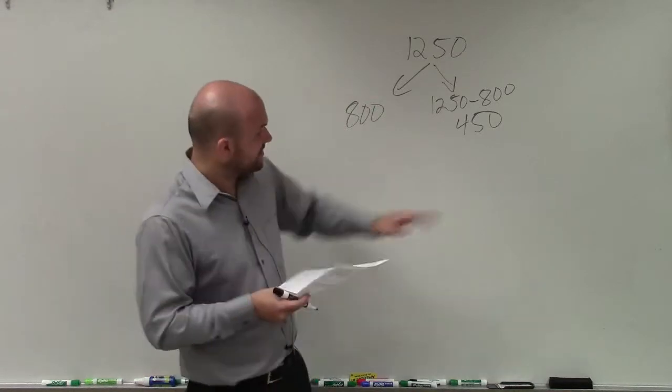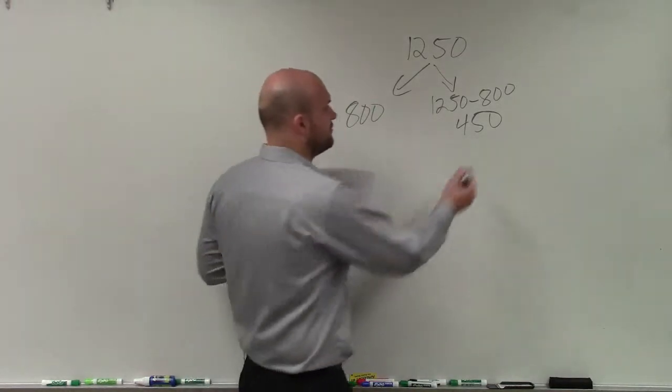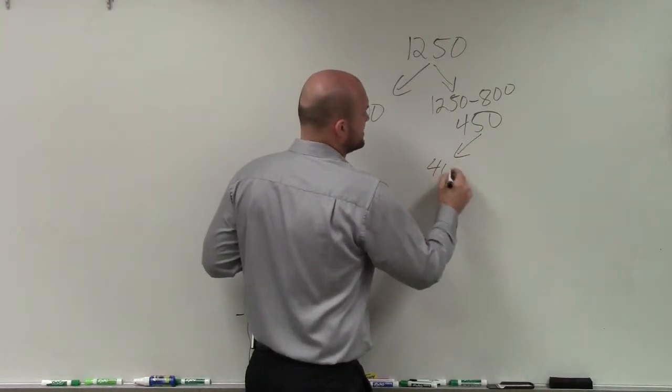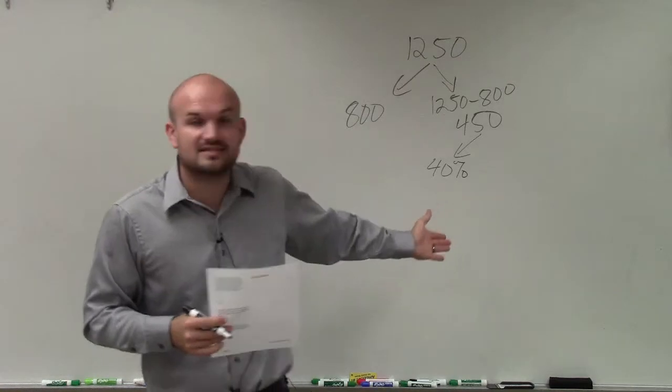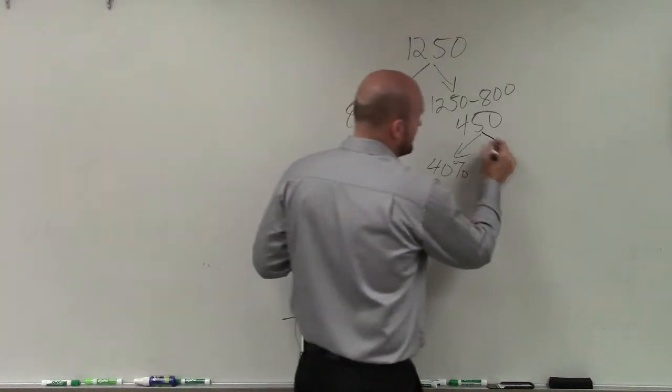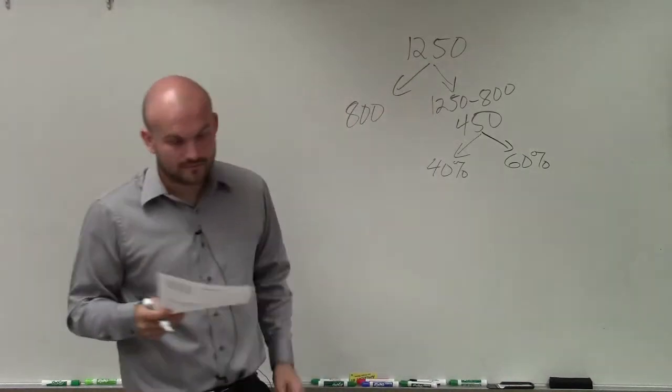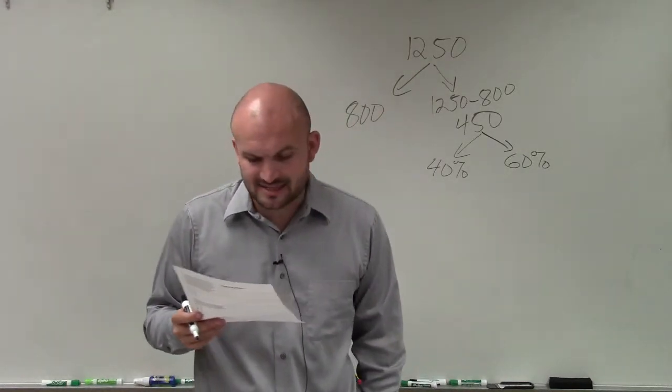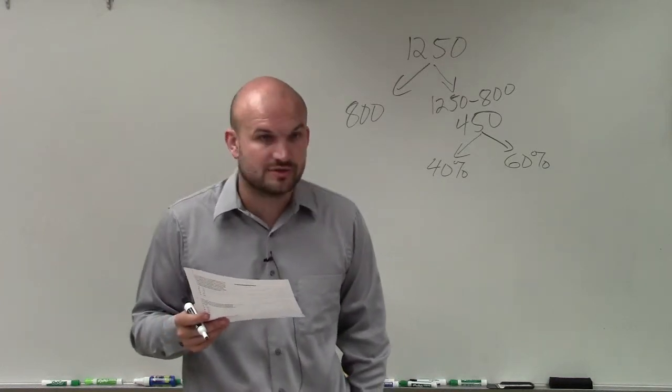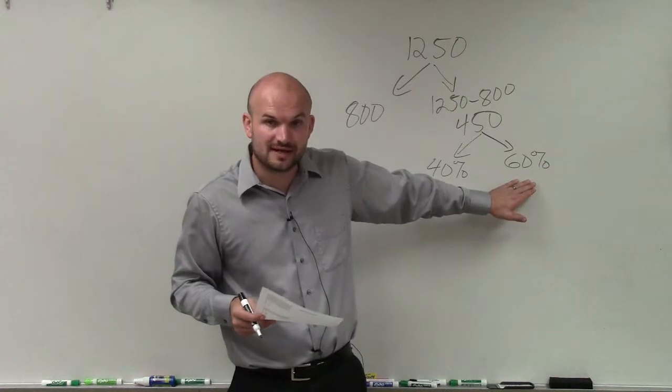Then it says, of the remaining participants, which is 450, 40% disliked it. So if 40% dislike it, then the amount that's going to be undecided would be 60%. The question states, how many participants in a taste test were undecided about the new drink? This is the ones that disliked it. This is the undecided.